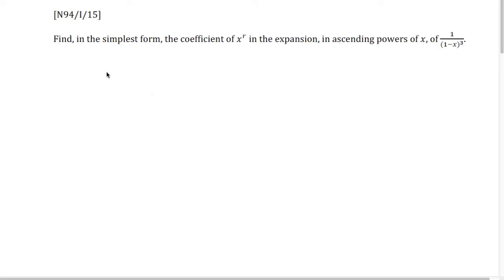A binomial series expansion question is usually not very difficult, until you see something a little bit like this. This kind of question revolves around the coefficient of x to the power of r, which makes it a lot more difficult. This can be counted as one of the hardest types of question for A-level binomial series expansion. So let's take a look at this example, which is from the 1994 actual A-level examinations.